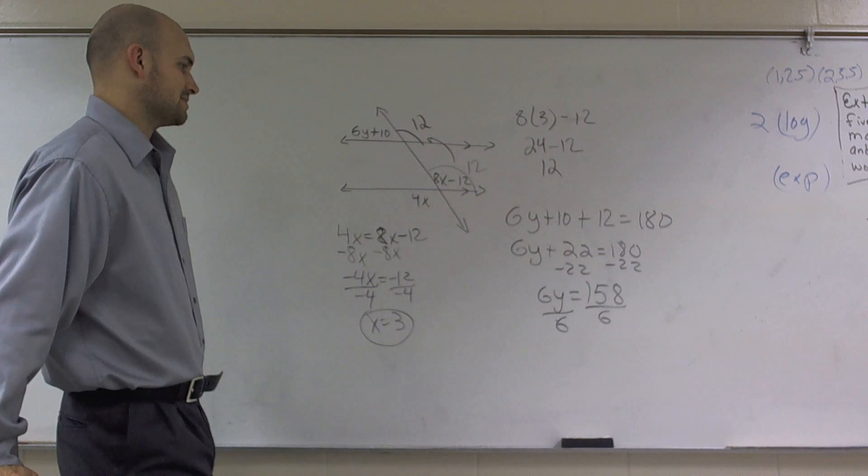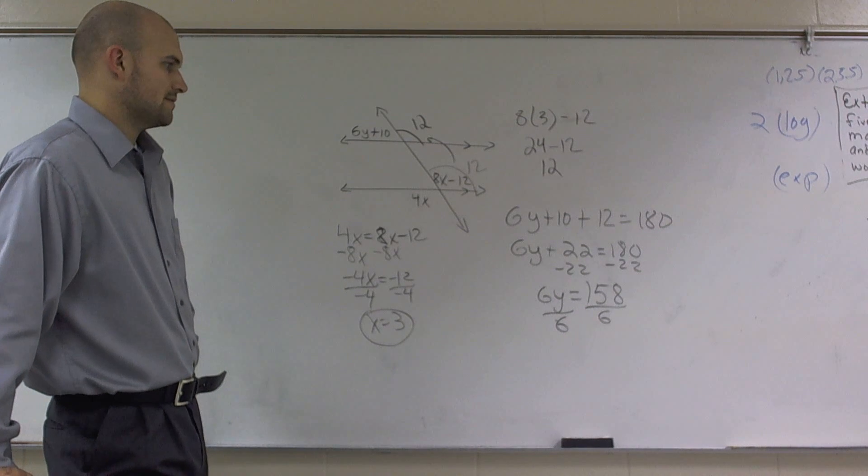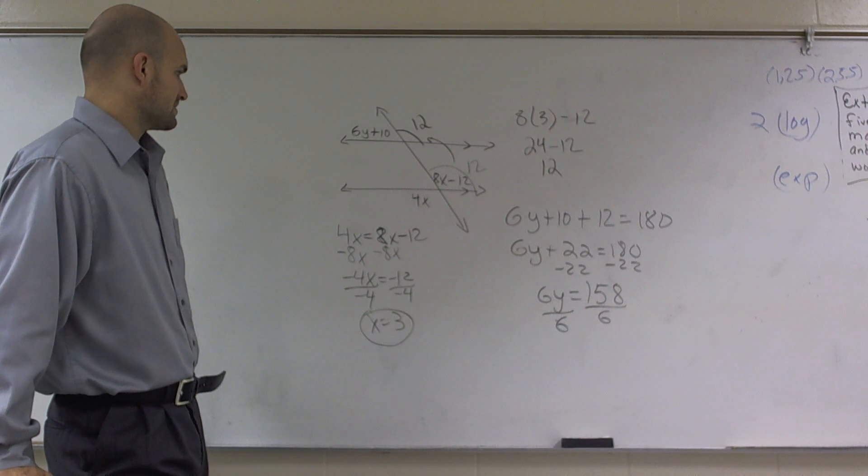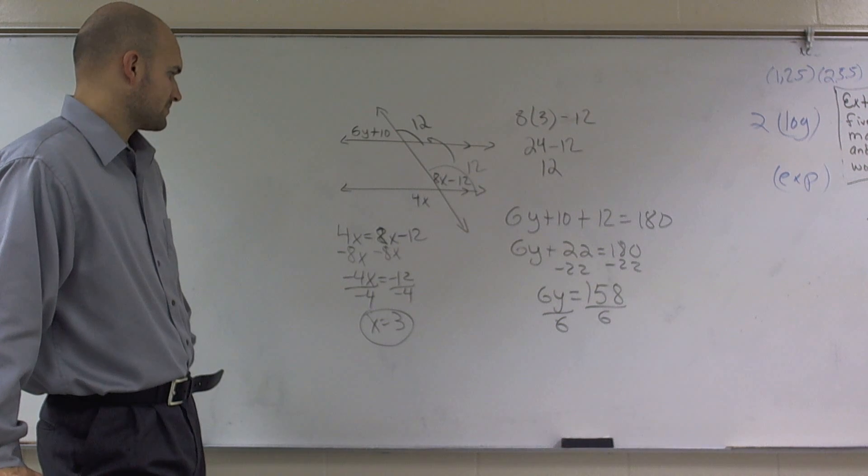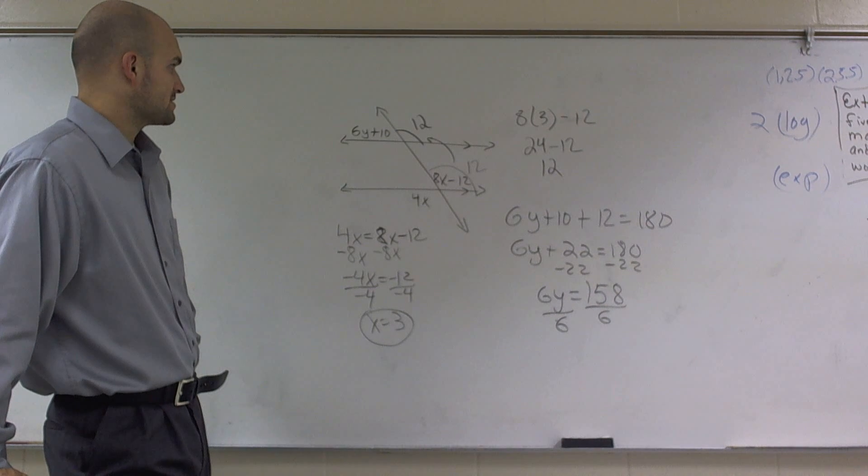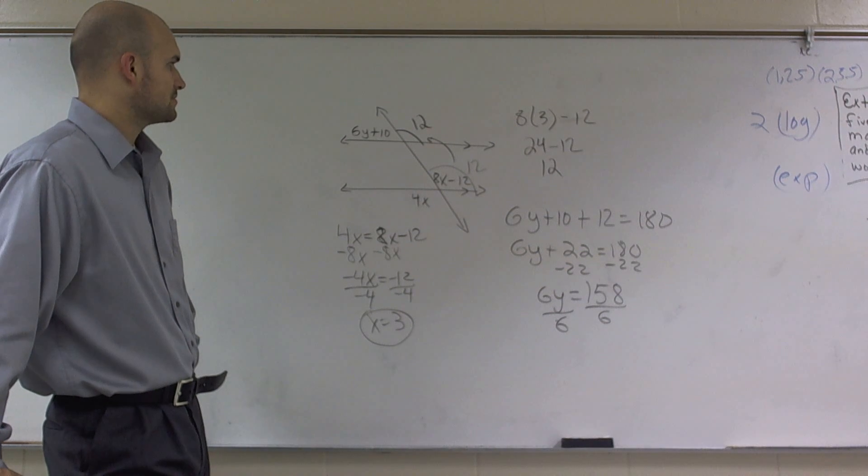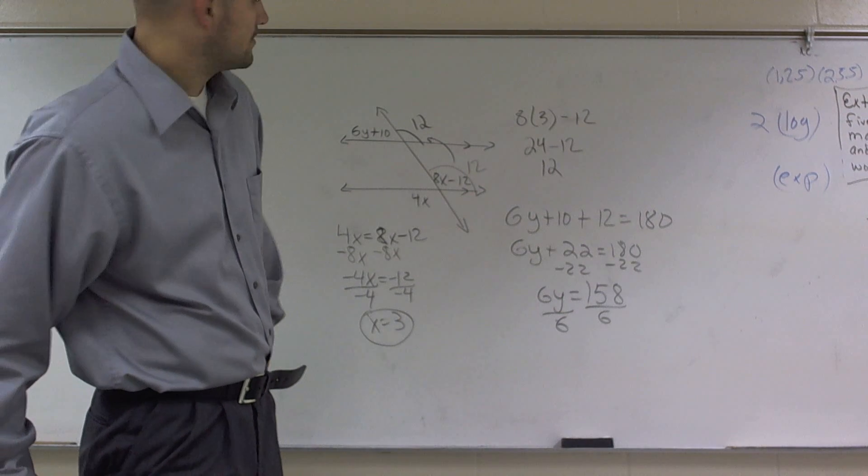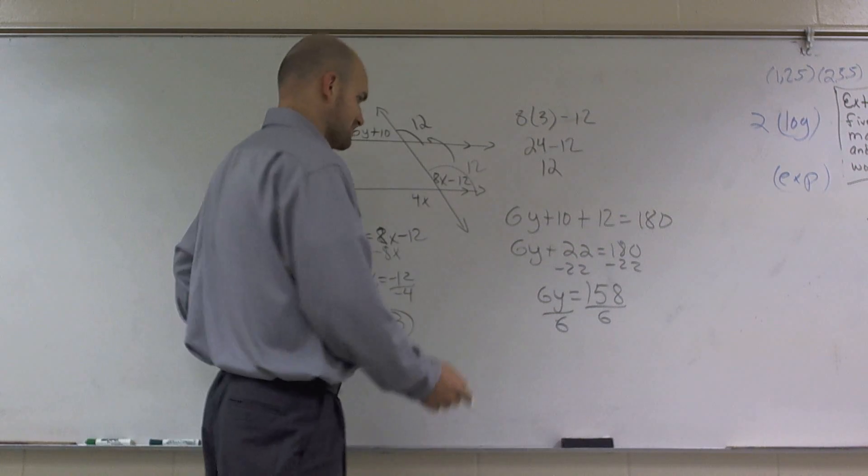And let's see, let me double check here. 4x is equal to 8x minus 12. So we're trying to make negative 4x equals 12. Positive 3. 8 times 3 is 24, minus 12 is positive 12. That's 12 degrees. 22. Subtract 22. 6y. Yep. Okay. I guess we'll have a decimal.